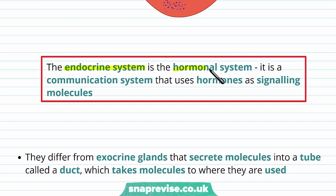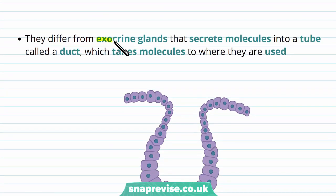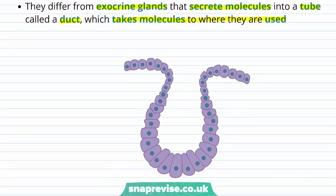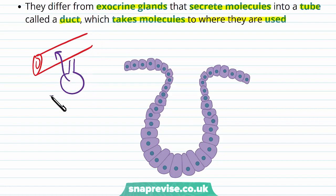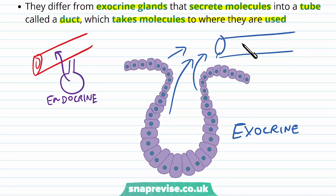The endocrine system is the hormonal system — they're the same thing — a communication system using hormones as a signaling molecule. There are lots of endocrine glands around the body. They're different from exocrine glands, because exocrine glands secrete molecules into a tube called a duct, which takes molecules to where they get used. With endocrine glands, the hormone is released straight into the blood, whereas exocrine glands release substances into ducts or tubules, which are slightly different types of vessels.